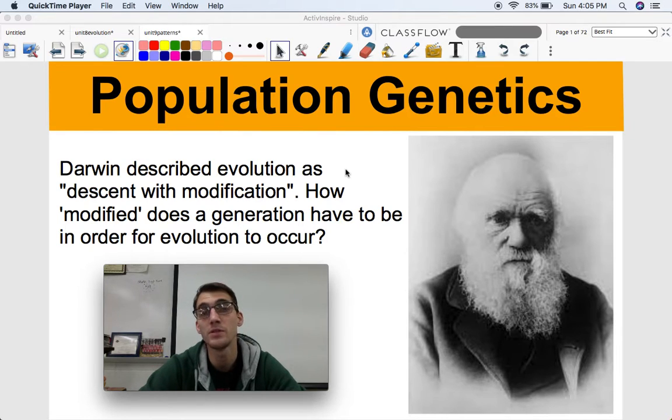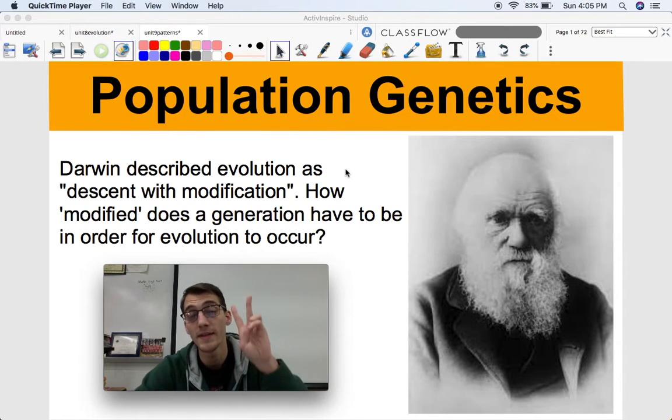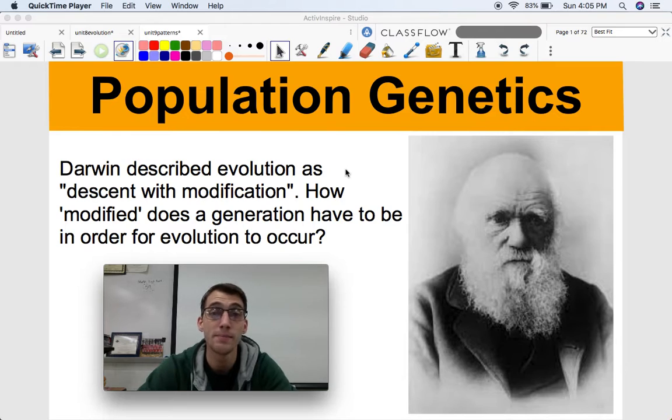We're going to split this up into two videos. In this video, we're going to talk about allele frequency and microevolution and how we're going to calculate that. And in the next video, we're going to talk about the five different ways that populations evolve or the five different ways that microevolution occurs.